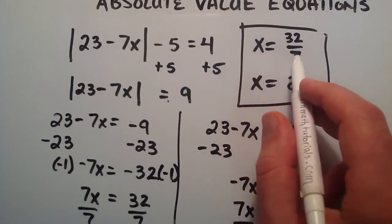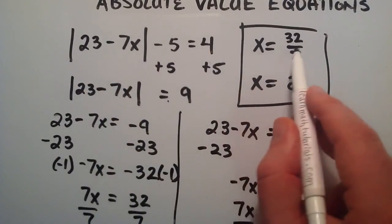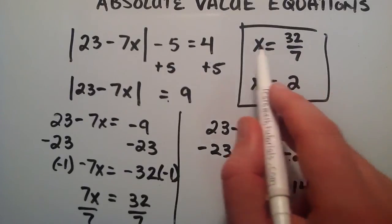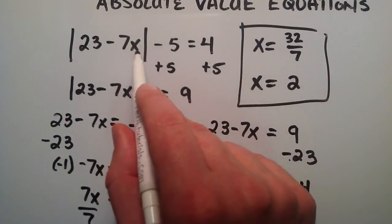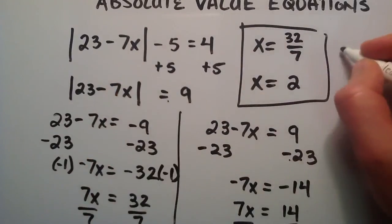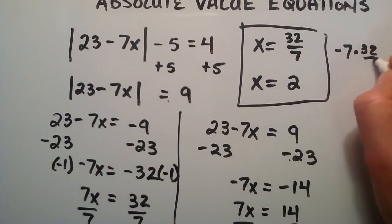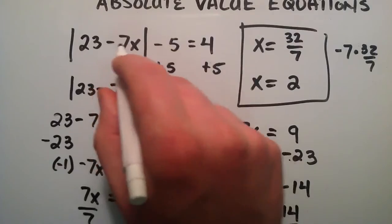And I'm just going to go over this with you guys so you can see how this works. So if we were to basically plug 32 over 7 where our x is in this equation, then we would have a minus 7, minus 7. And then x is 32 over 7. So that's times 32 over 7. So we've just kind of rewrote this term here.